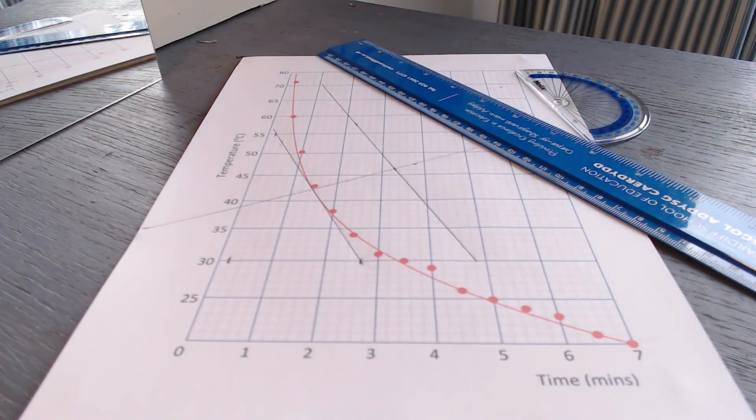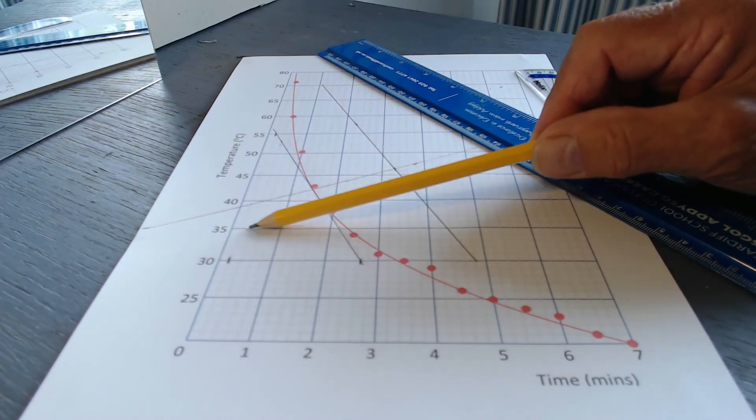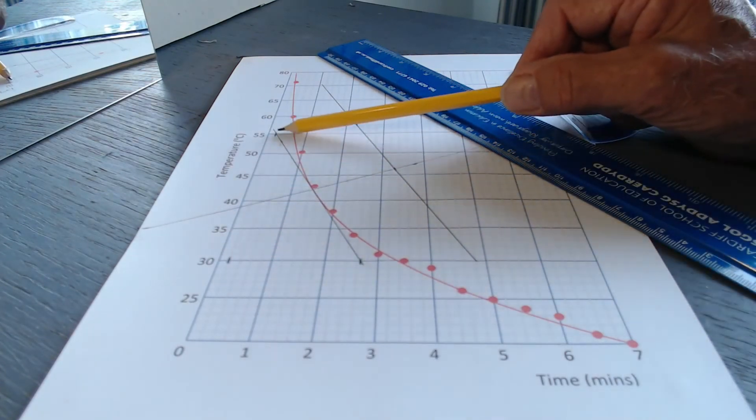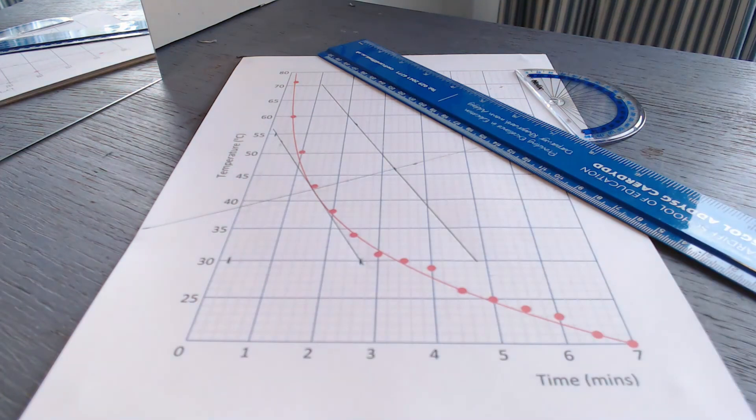Now, the y value here is 5, 10, 15, 20. Well, that's nice, exactly 25 units on my scale that I've done here.